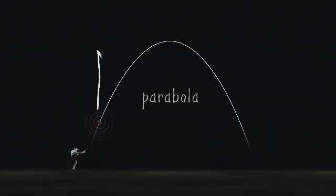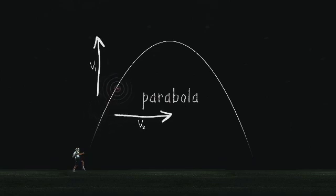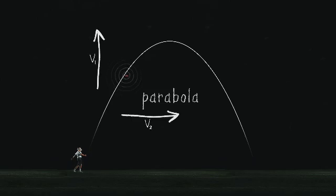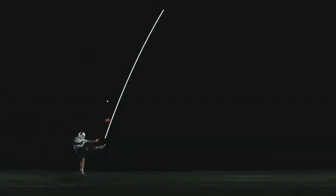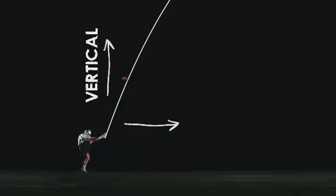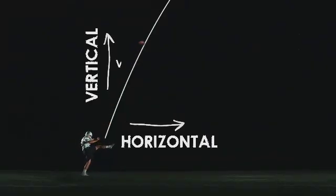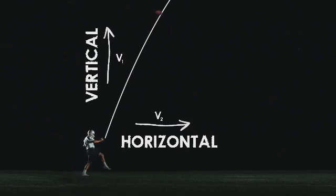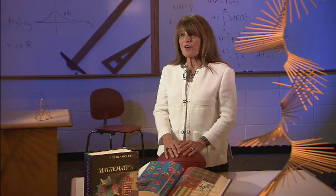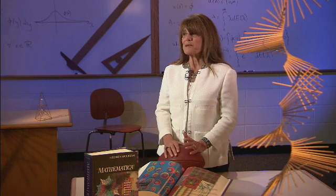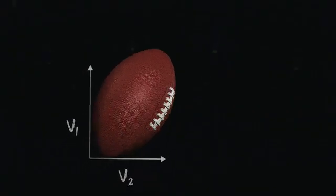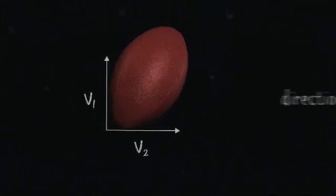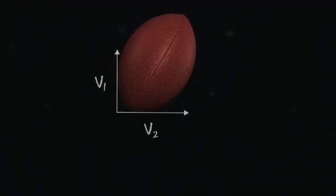The ball has a horizontal component — the speed it's traveling along the ground — and a vertical component — the speed it's moving vertically. These two velocity components, the vertical and the horizontal, can be represented as vectors. A vector is basically an arrow in two dimensions that describes some kind of physical quantity; in this case, vectors show the physical quantities of speed and direction. The greater the speed, the longer the velocity vector.